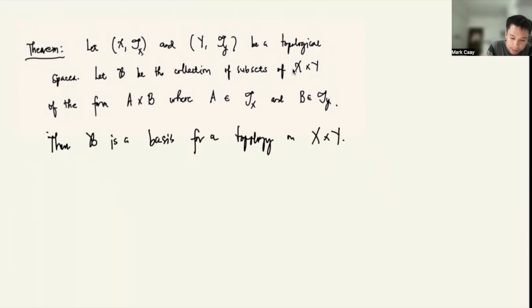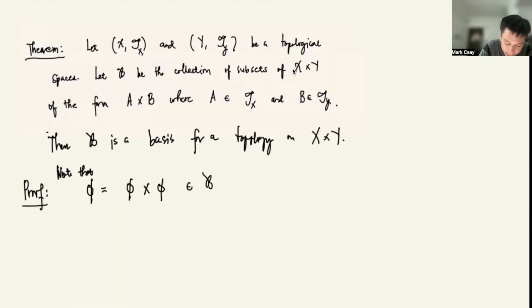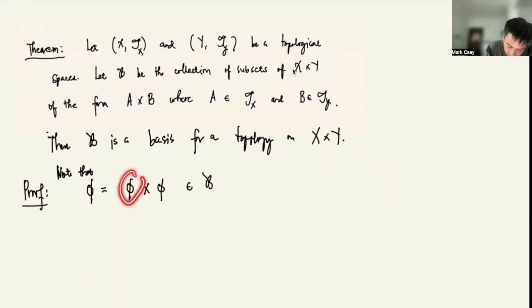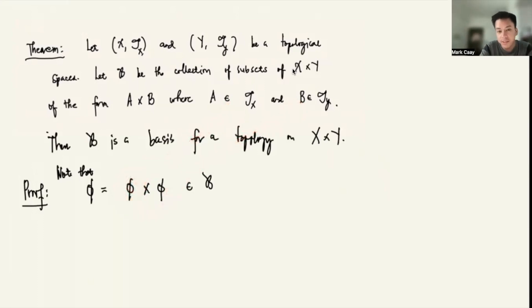How can we be sure this is true? The empty set can be written as ∅×∅. Since ∅ belongs to τ_X and ∅ belongs to τ_Y, their cross product is an element of script B. So the first condition holds. The second condition trivially holds.